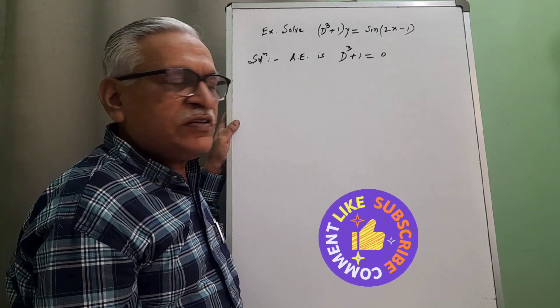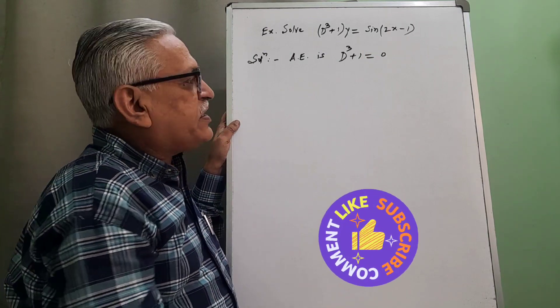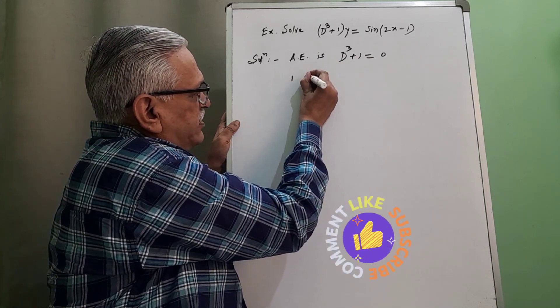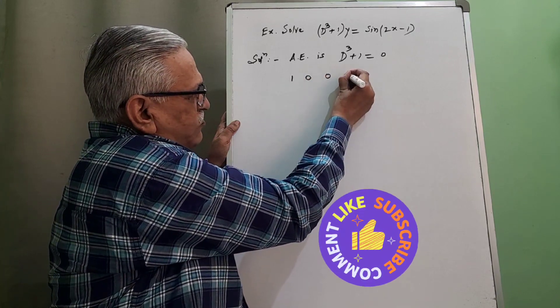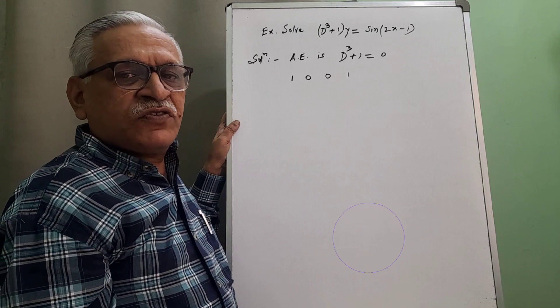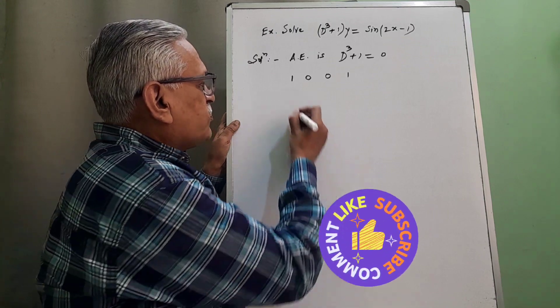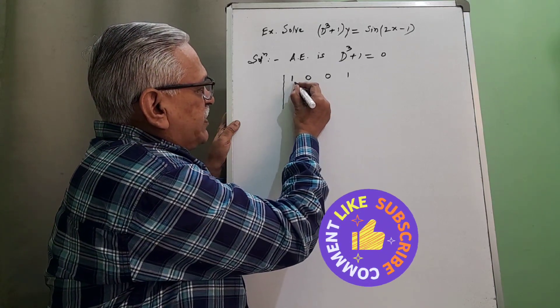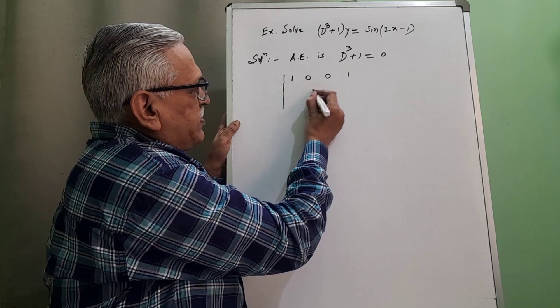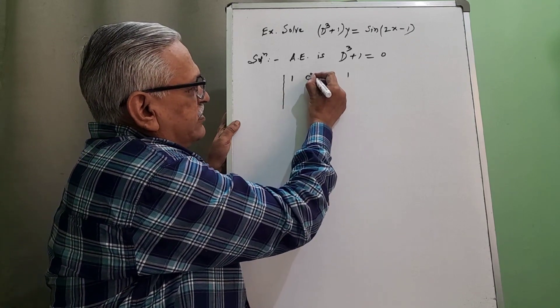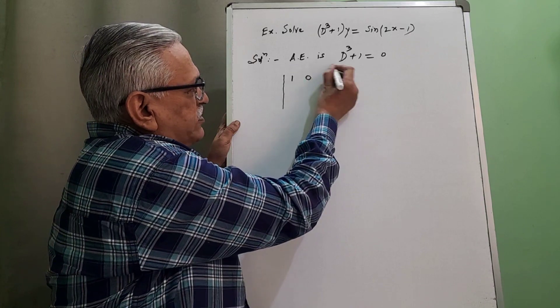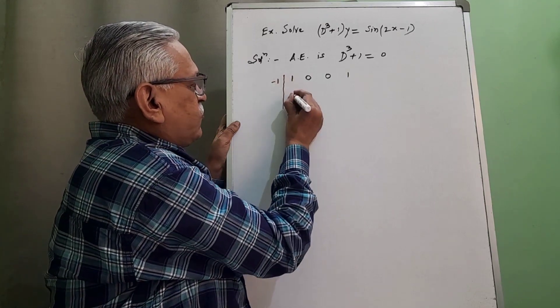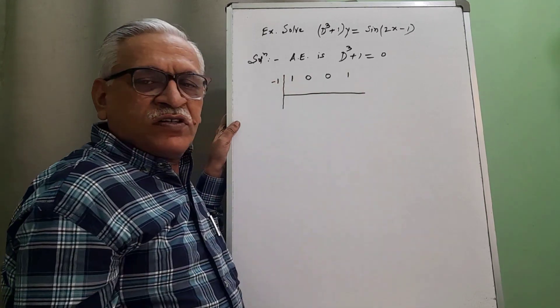Finding the roots of this cubic equation by synthetic division technique. Coefficient of d cube is 1, then d square absent, then d is absent, and then constant term 1. Here the sum of the term is not equal to 0, therefore 1 is not the root. Then we check whether minus 1 is the root. For that the shortcut method is sum of the odd coefficient.